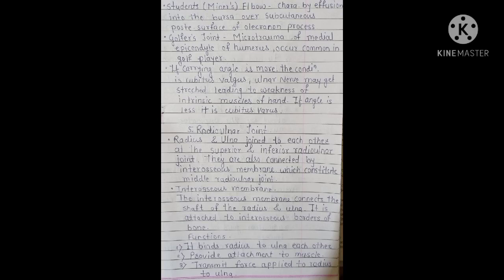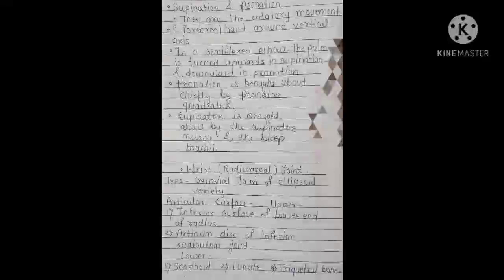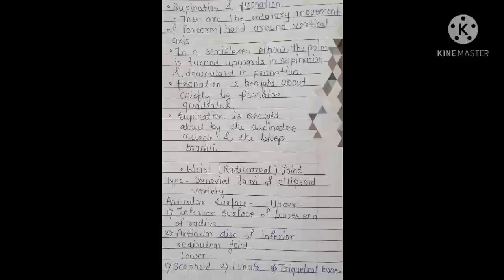The radius and ulna articulate at the superior and inferior radio-ulnar joints, also connected by the interosseous membrane, which constitutes the middle radio-ulnar joint. The interosseous membrane connects the shafts of the radius and ulna, attached to the interosseous border of the bone. Its functions are: binding the radius to the ulna, providing attachment to muscles, and transmitting force applied to the radius to the ulna.